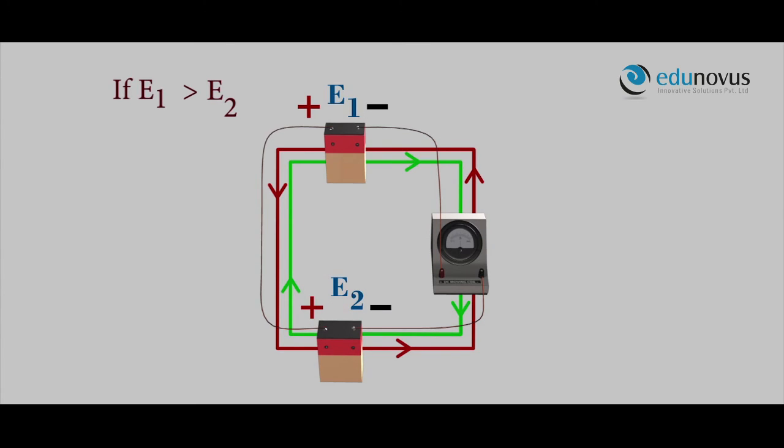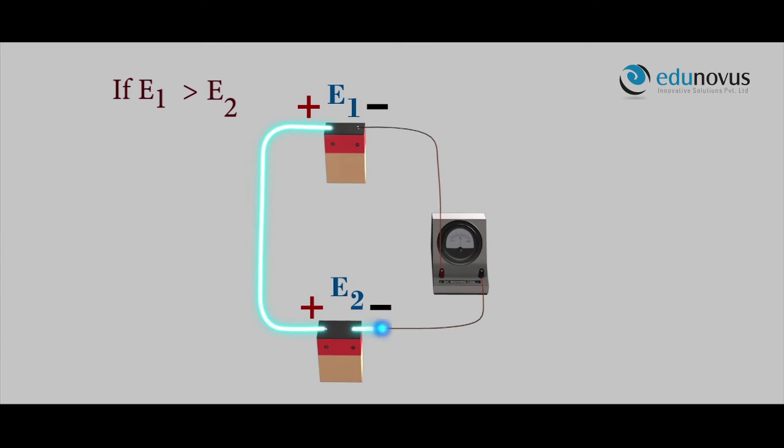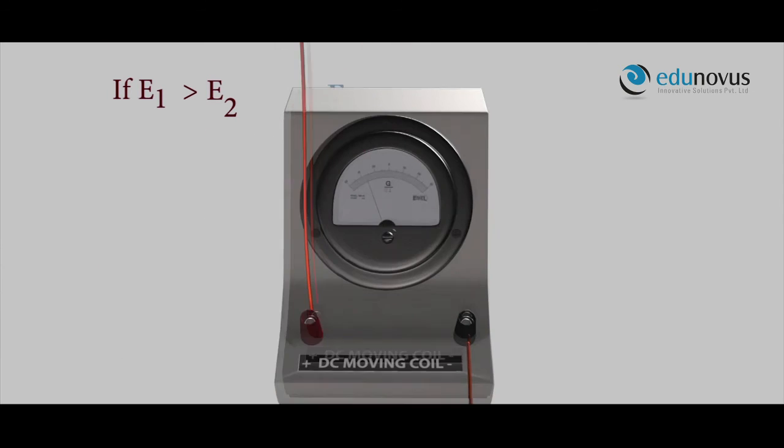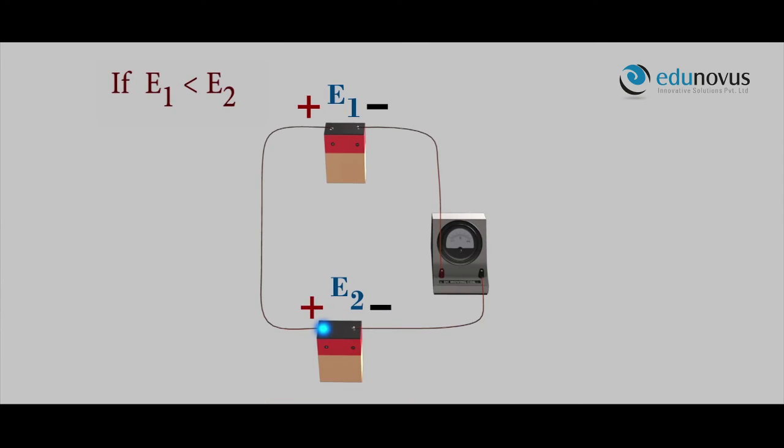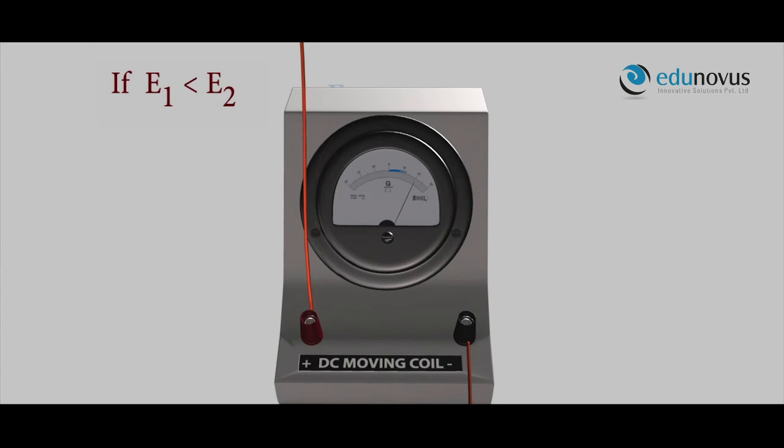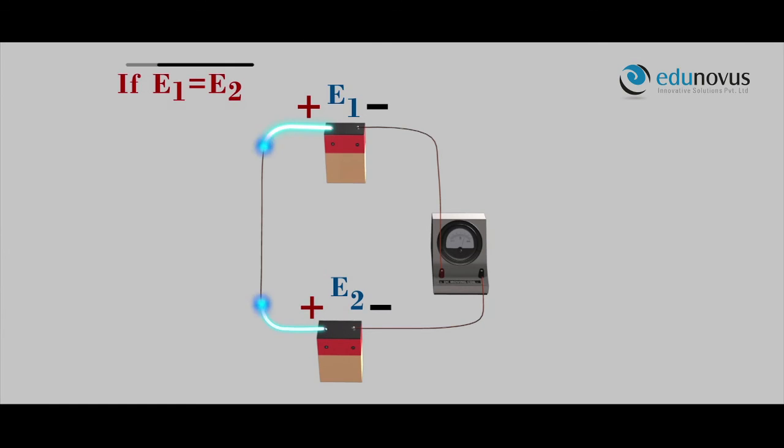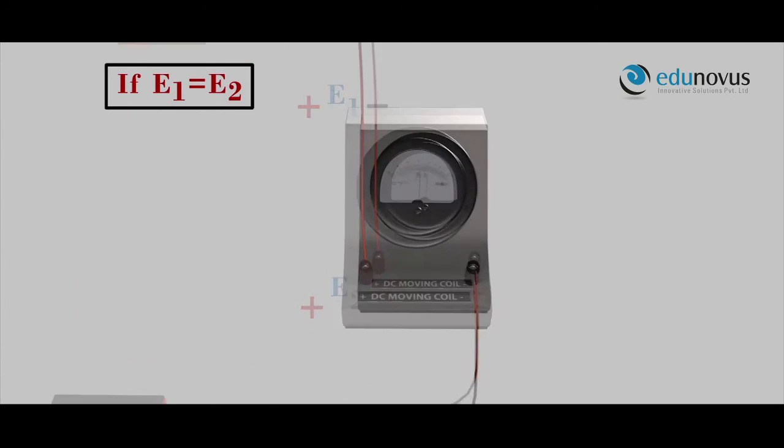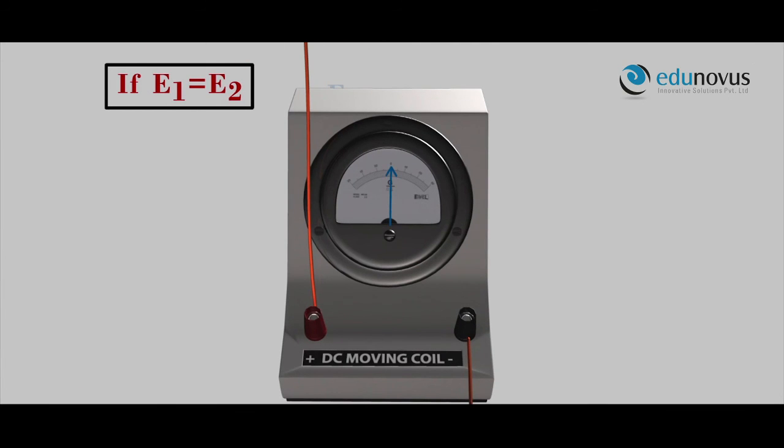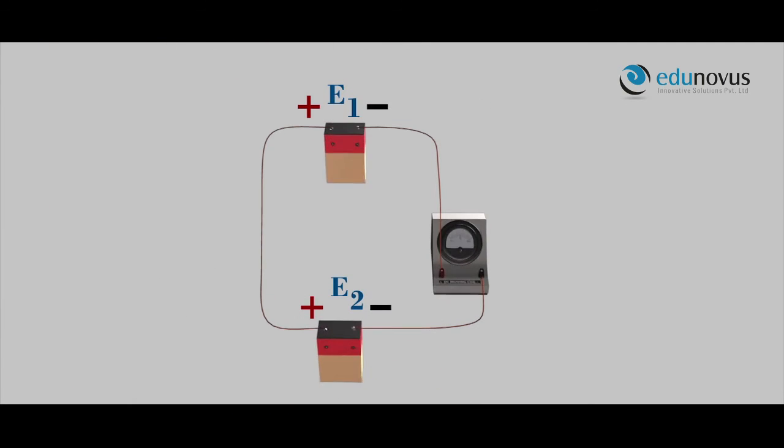If E1 is greater than E2, the galvanometer deflects towards the left. If E1 is less than E2, the galvanometer deflects towards the right. If E1 equals E2, the galvanometer shows null deflection—that is, no current is flowing in the circuit.